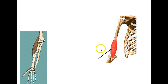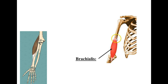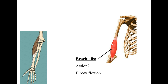Just underneath the biceps brachii is the brachialis. It's a shorter muscle but actually a more effective flexor of the elbow joint. Its origin is on the shaft of the humerus and its insertion is near the coronoid process of the ulna. At the humeral-ulnar joint, it causes flexion. Technically the brachialis is the primary flexor of the elbow — it just gets overlooked because the biceps brachii covers it.